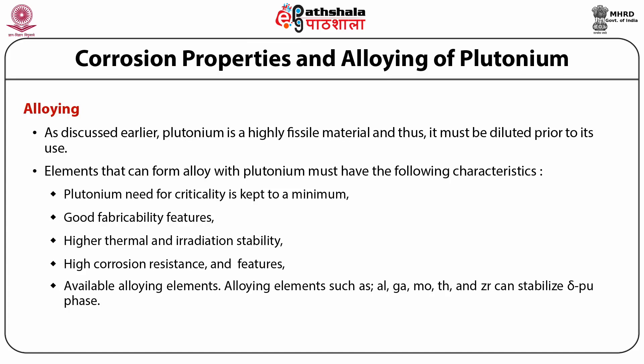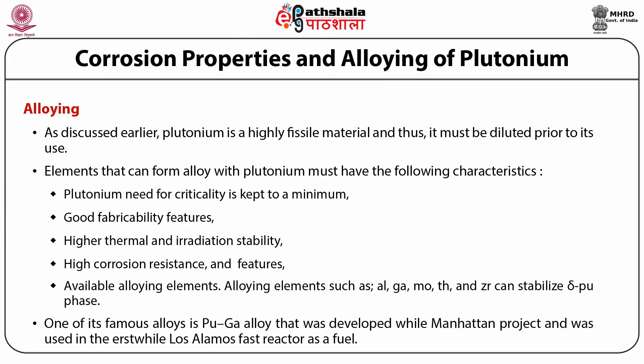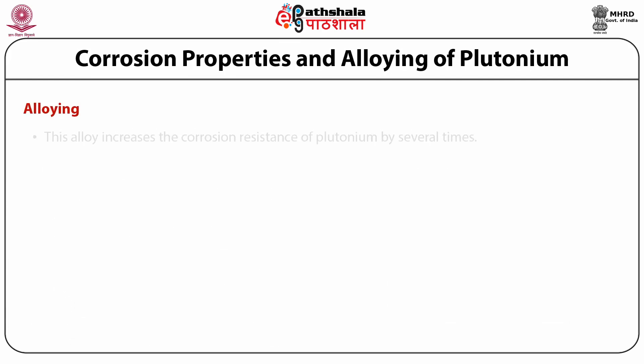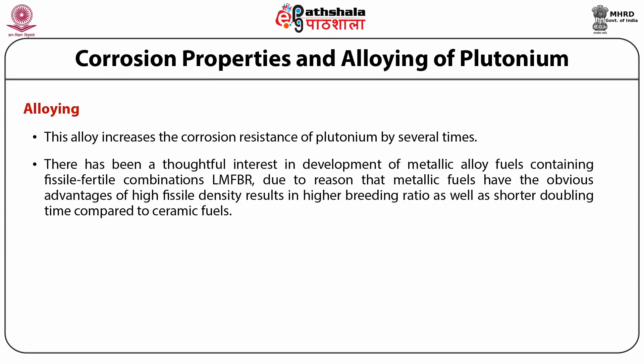Alloying elements such as aluminium, gallium, molybdenum, thorium and zirconium can stabilise the delta-Pu phase. One of its famous alloys is the Pu-Ga alloy that was developed during the Manhattan Project and was used in the Los Alamos fast reactor as a fuel. This alloy increases the corrosion resistance of plutonium by several times. There has been considerable interest in developing metallic alloy fuels containing fissile-fertile combinations for LMFBRs, as metallic fuels offer higher fissile density, higher breeding ratio, and shorter doubling time compared to ceramic fuels.